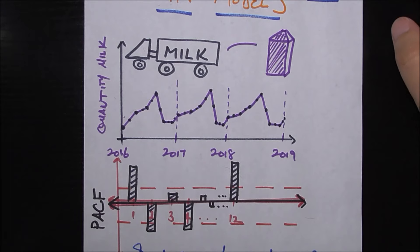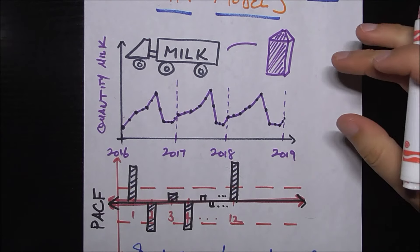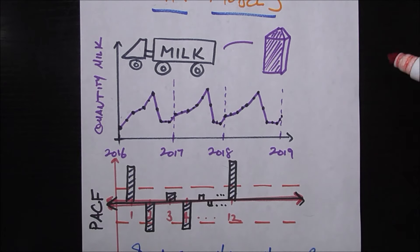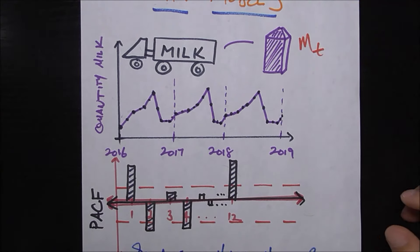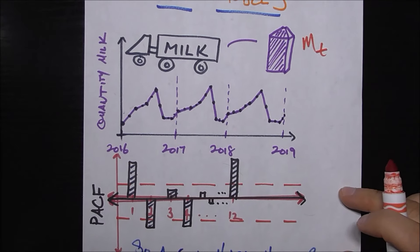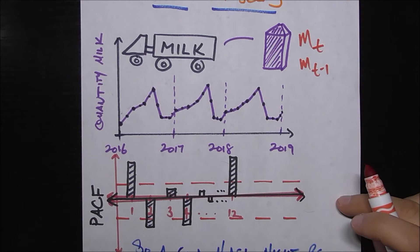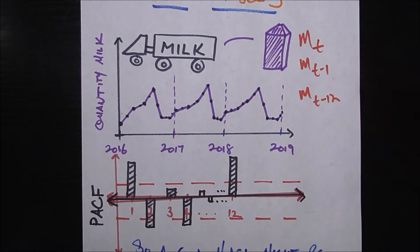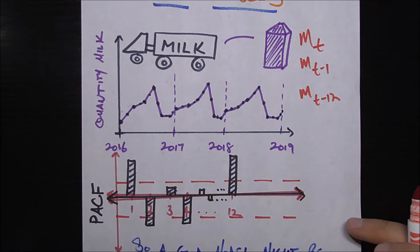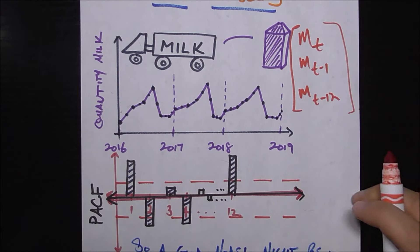Now how would we figure that out? Let me introduce some notation here so we can write a model in just a second. Let's say m sub t is the quantity of milk that is demanded this month. M sub t minus 1 is the quantity of milk that was demanded last month. And t minus 12 for example is the quantity of milk that was demanded 12 months ago or this time last year.